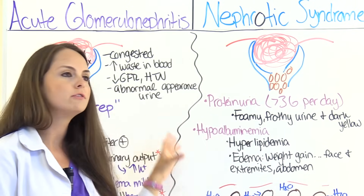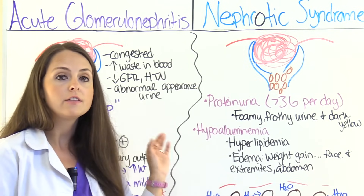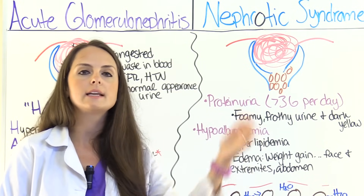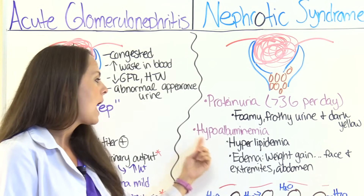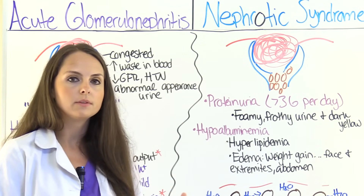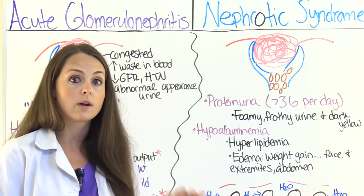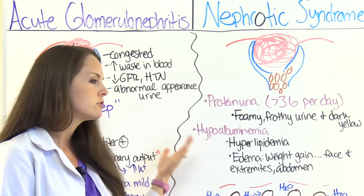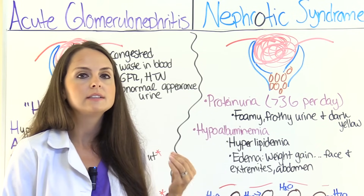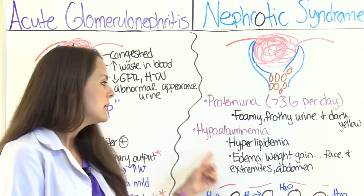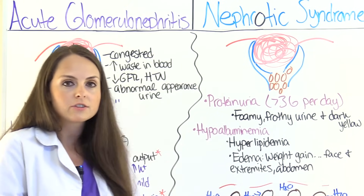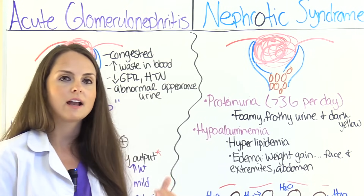Because so much protein is lost in the urine, the protein level — specifically albumin — in the blood will decrease, resulting in hypoalbuminemia. When albumin levels drop, the liver tries to make more albumin, but when it does that, it also increases lipid levels like triglycerides and cholesterol. So the patient will have hyperlipidemia, which looks unusual in pediatric patients who should not typically be having hyperlipidemia.